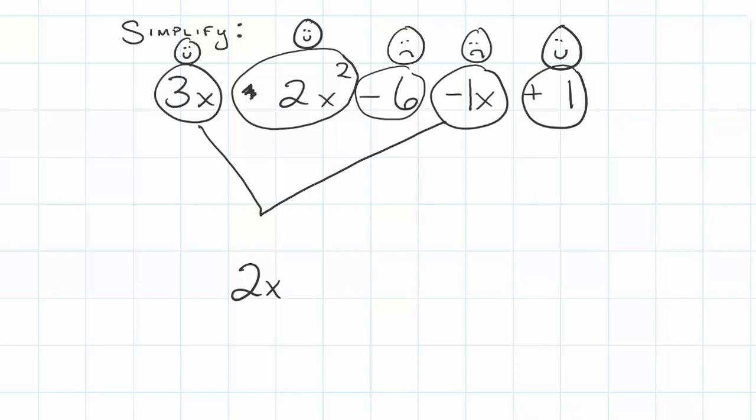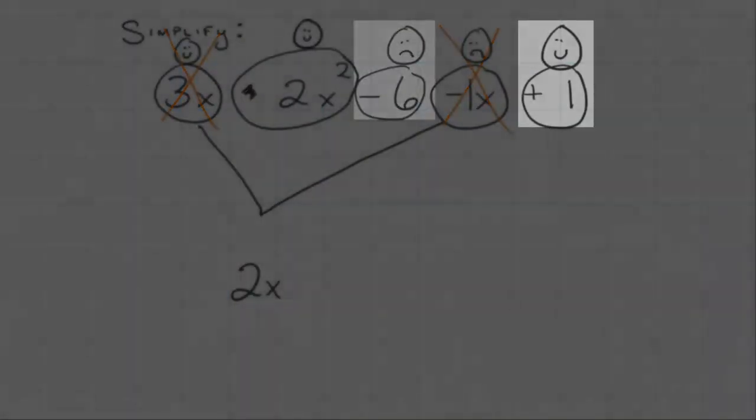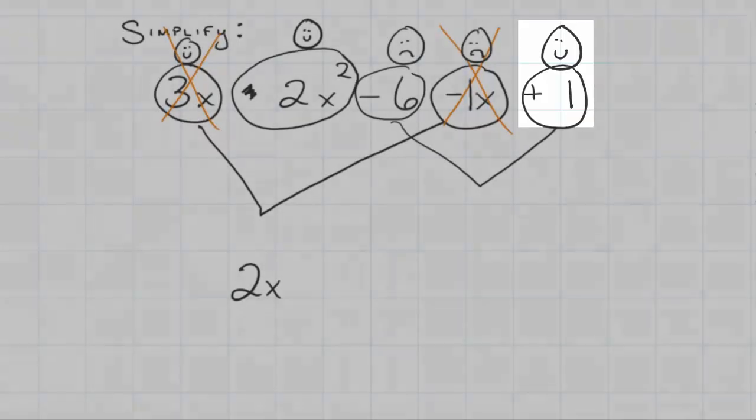First one is done, I'm gonna cross those out. Second thing I'm gonna put together is the numbers that I see. I've got negative 6 and I also have a positive 1. Numbers can go with numbers.